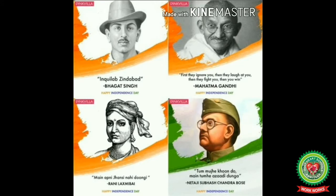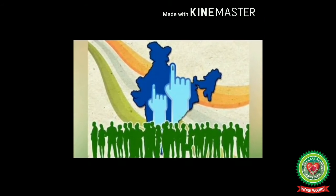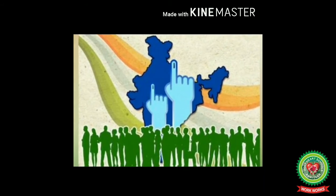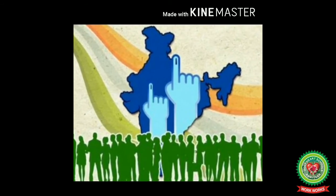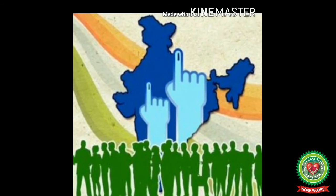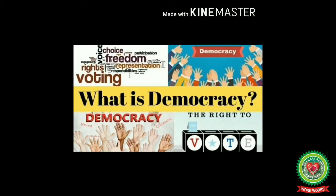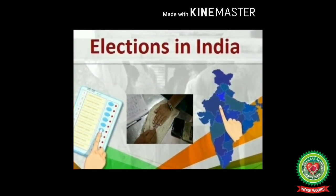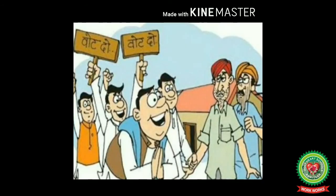Freedom fighters like Bhagat Singh, Mahatma Gandhi, Rani Lakshmi Bai, Netaji Subhash Chandra Bose, and others fought for India's independence. After freedom, India became a democratic nation in 1950. Every citizen has the power to take part in the country's administration and we elect our leaders who lead the country.